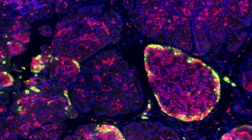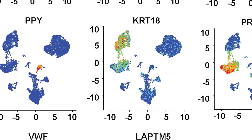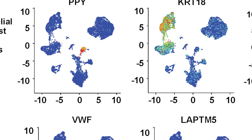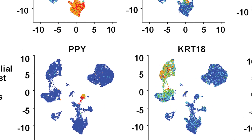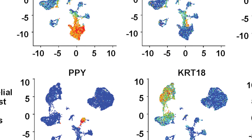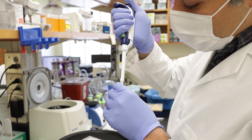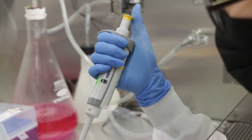We found an endocrine progenitor population in the adult pancreas. This is the first time we can unambiguously identify this population. Now that we know this population exists, we can potentially find ways to utilize it to derive more beta cells. By making more beta cells, we can eventually cure diabetes.